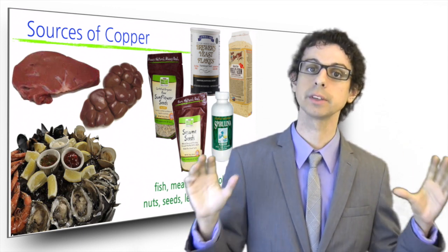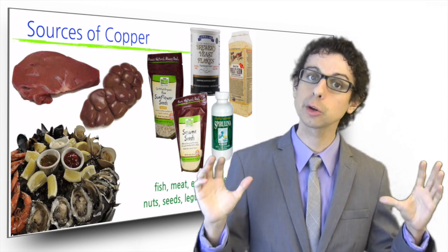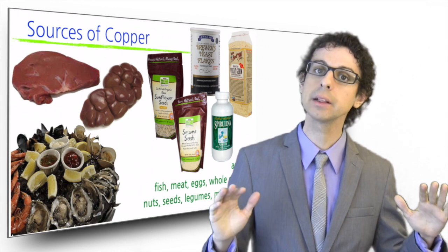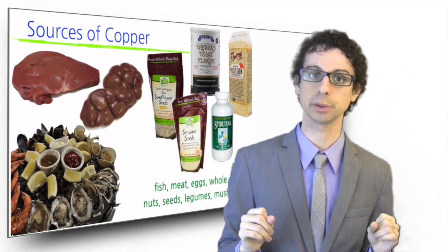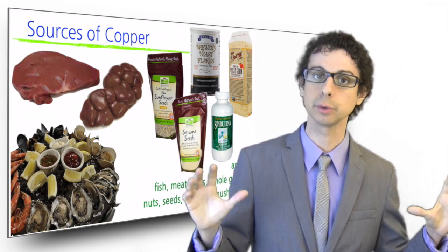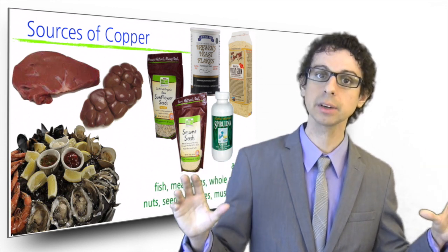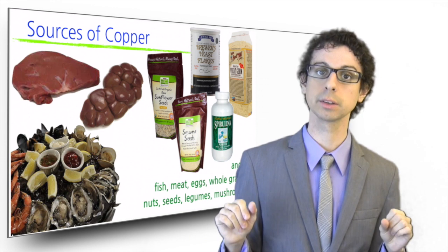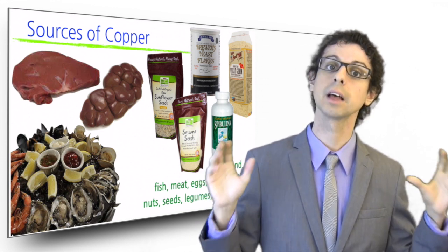In general, copper is found in fish, meat, eggs, whole grains, nuts, seeds, legumes, and mushrooms, but is very low in milk and dairy, fruits and vegetables. Among plant foods, sesame seeds, sunflower seeds, wheat germ, and spirulina are all very good sources of copper, as well as brewer's yeast.